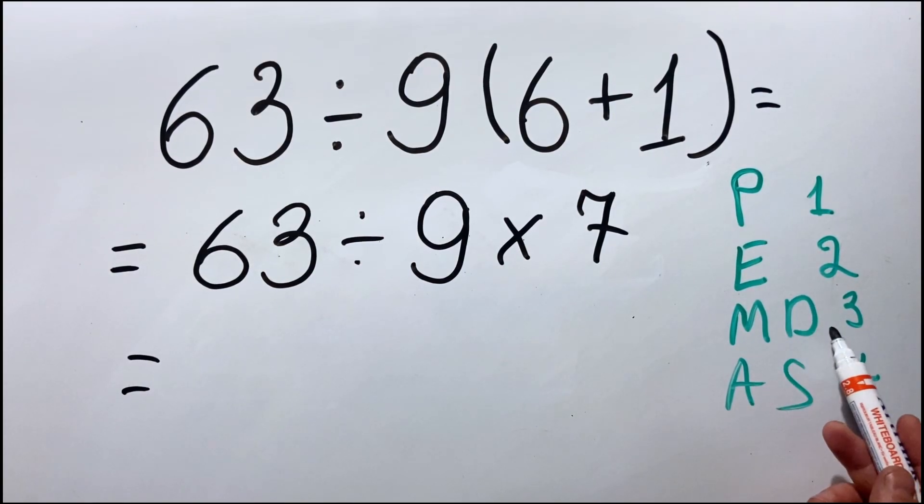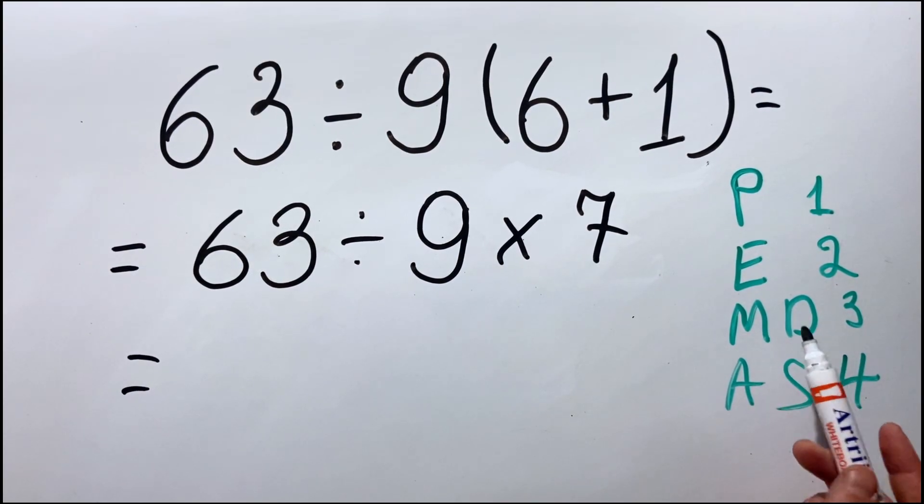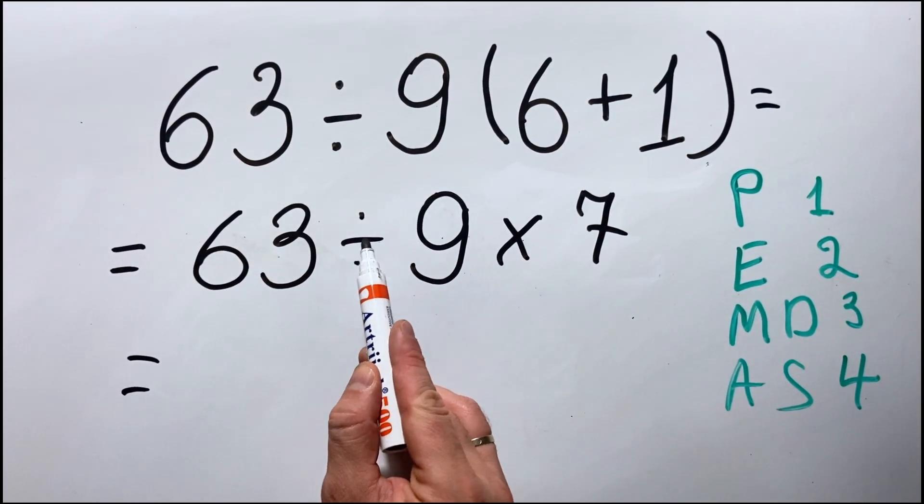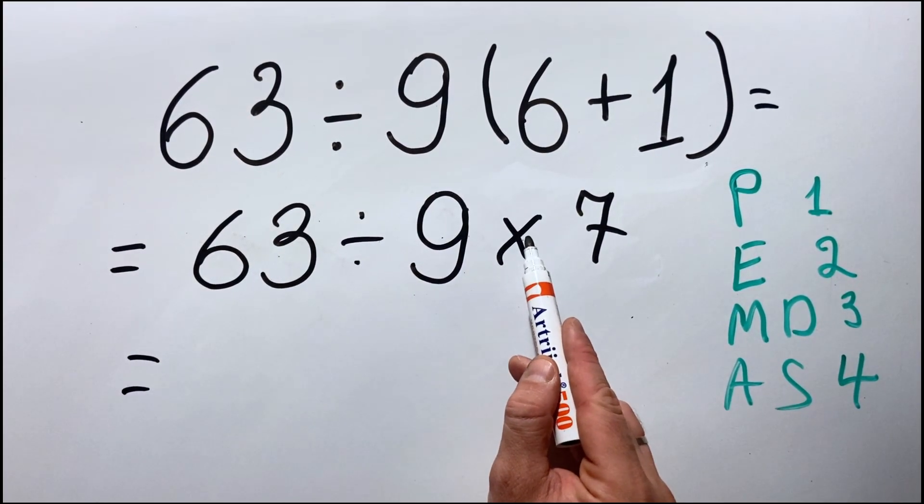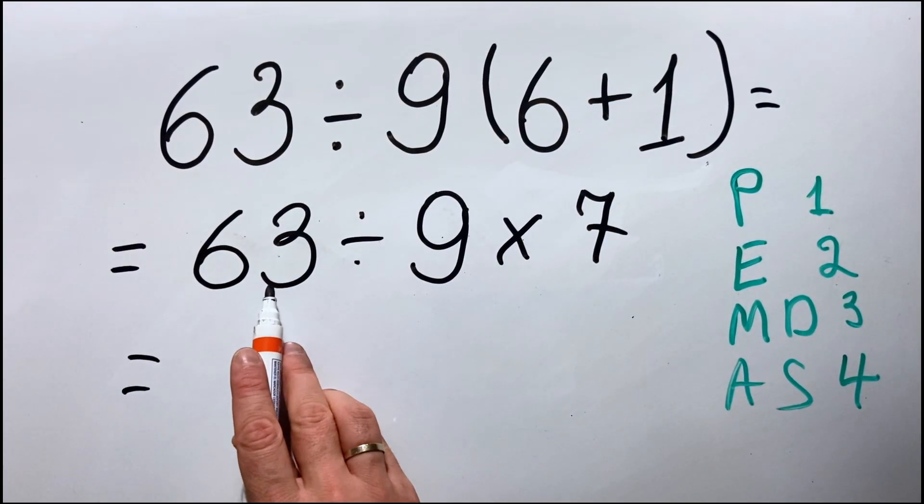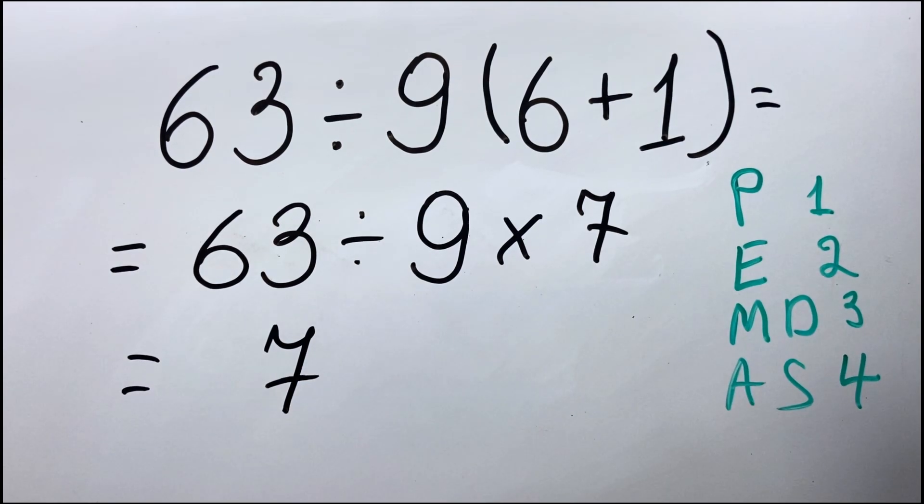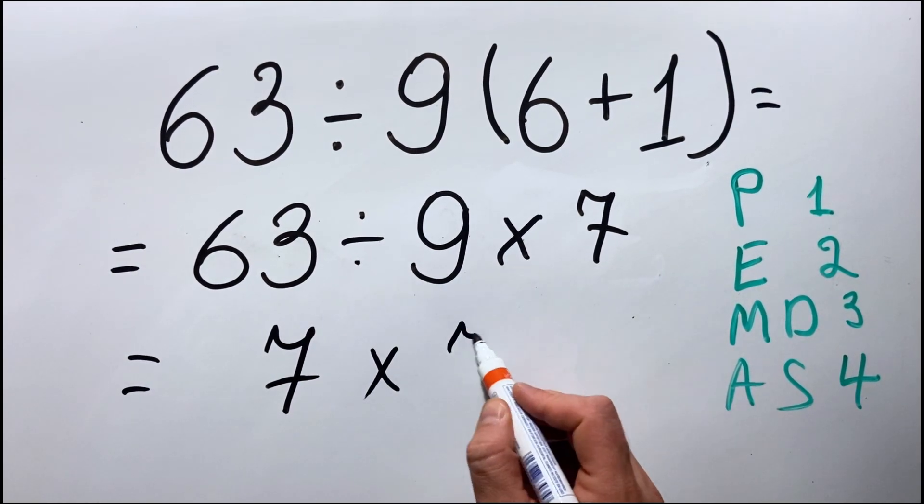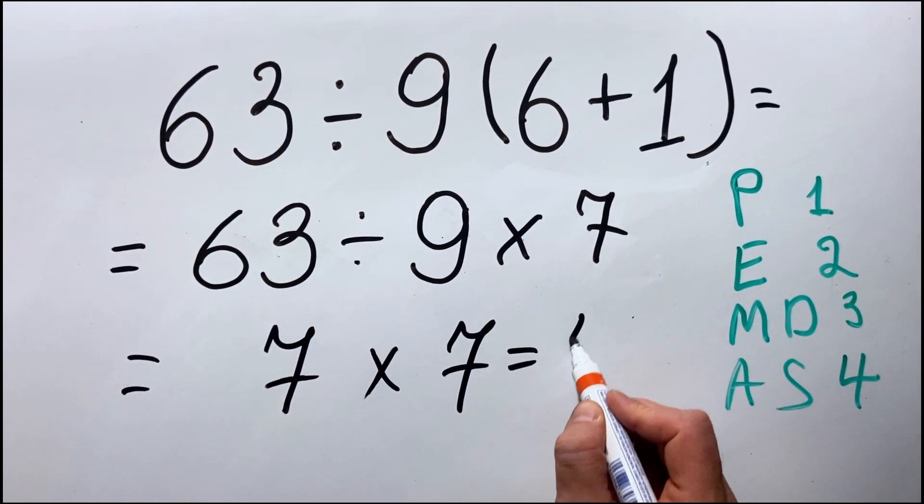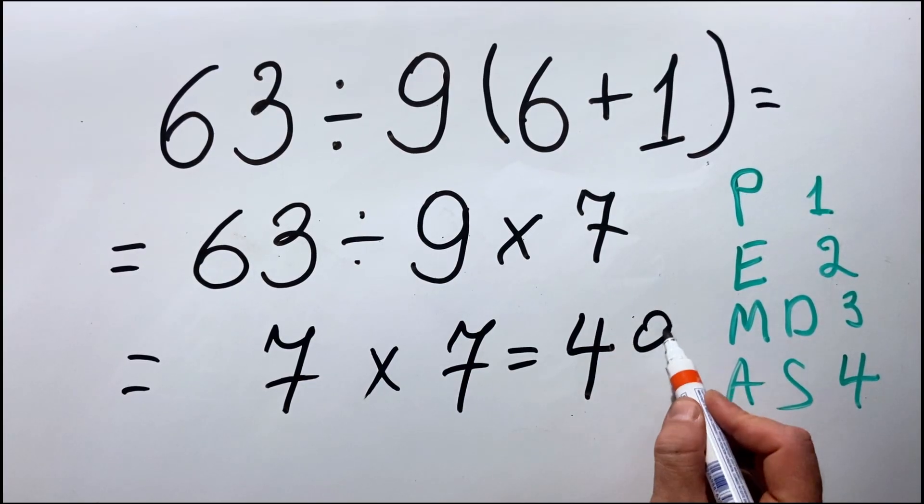Now, we know that multiplication and division, they have equal priority and they need to be done from left to right. Therefore, we'll first do the division and last we'll do the multiplication. 63 divided by 9 equals to 7 and 7 multiplied by 7 equals to 49.